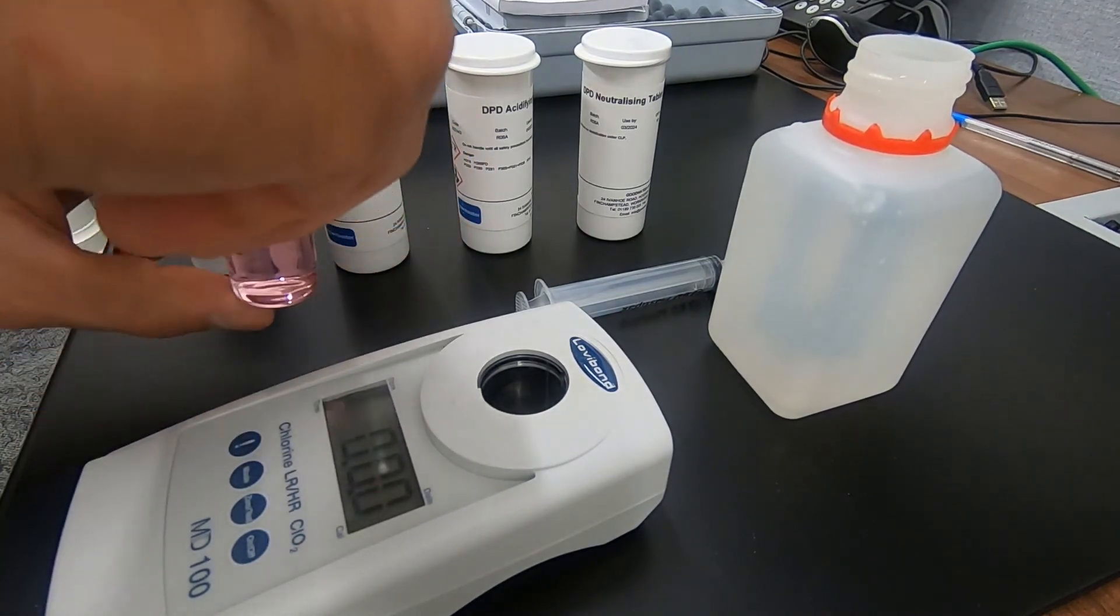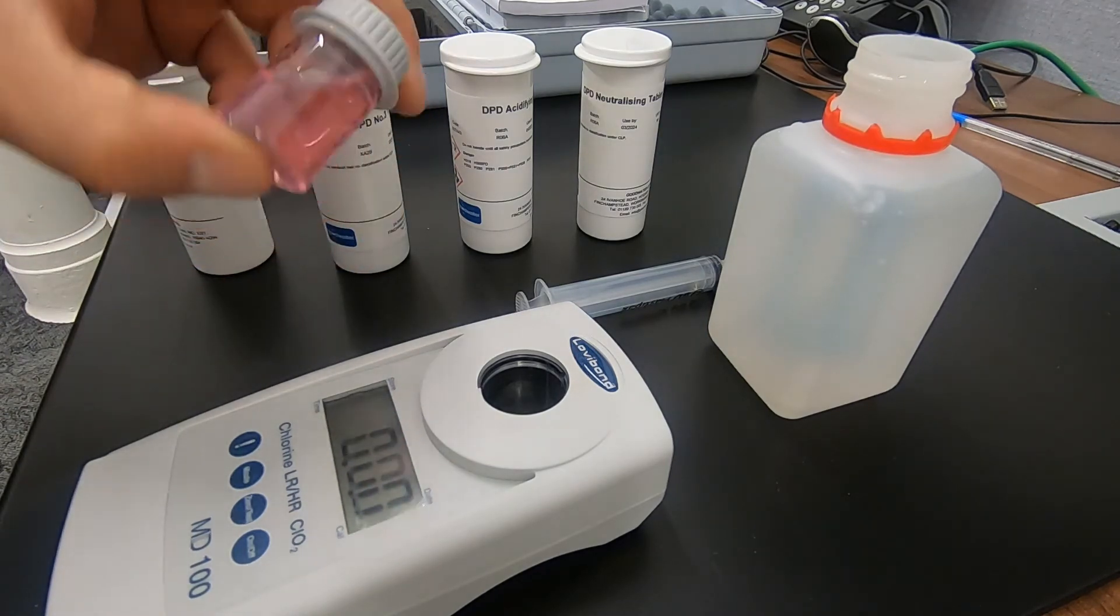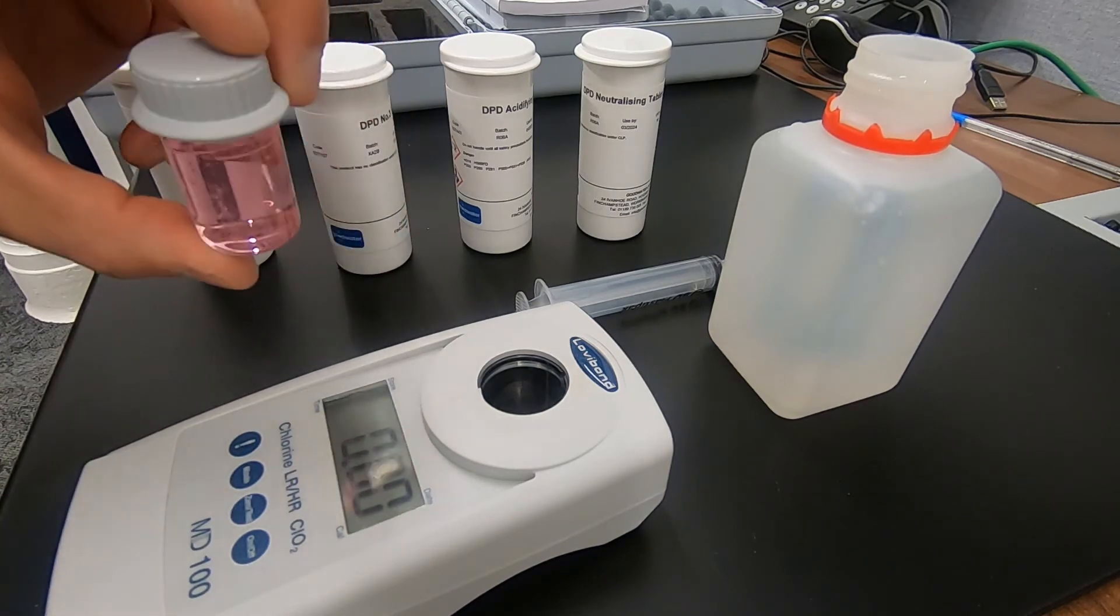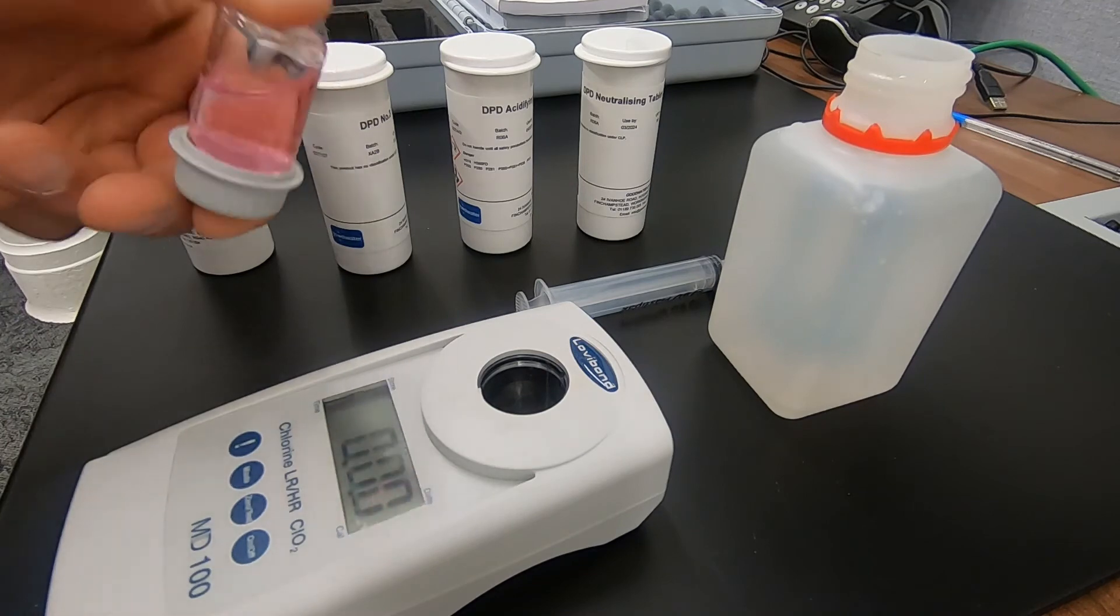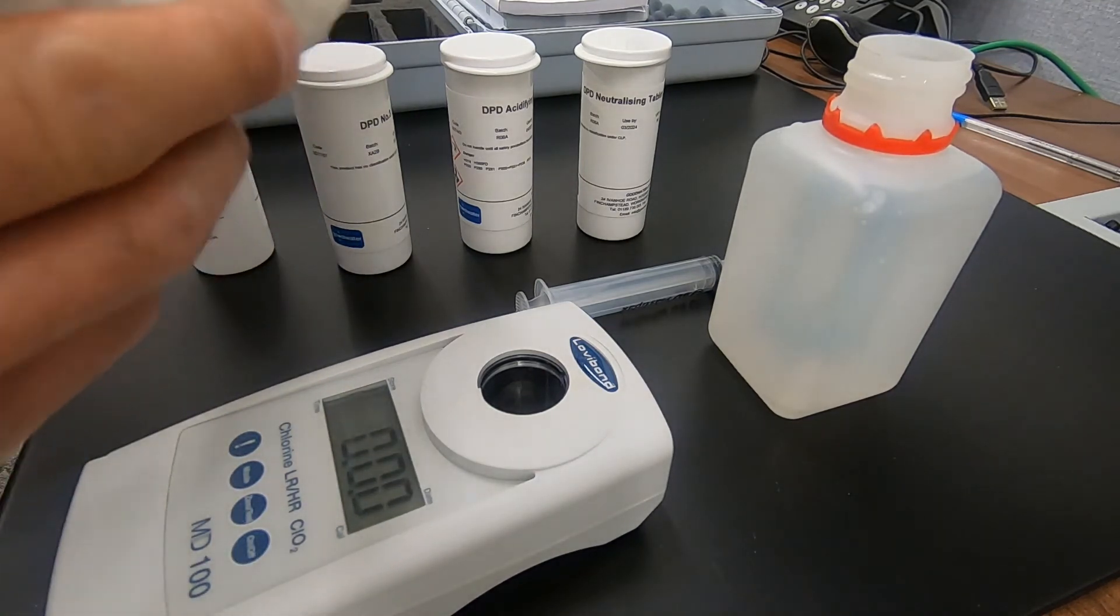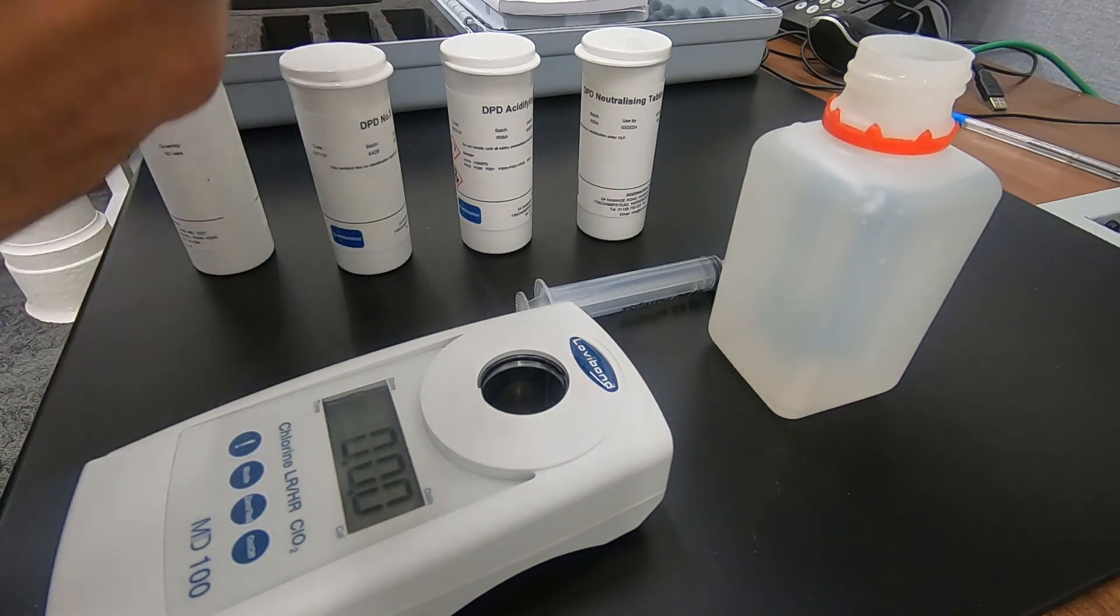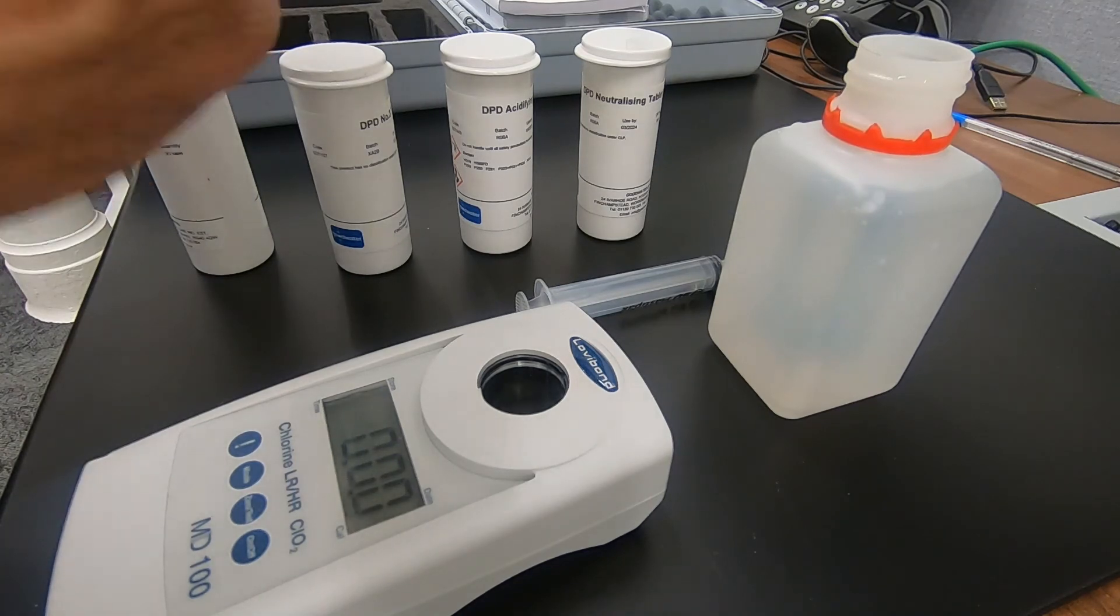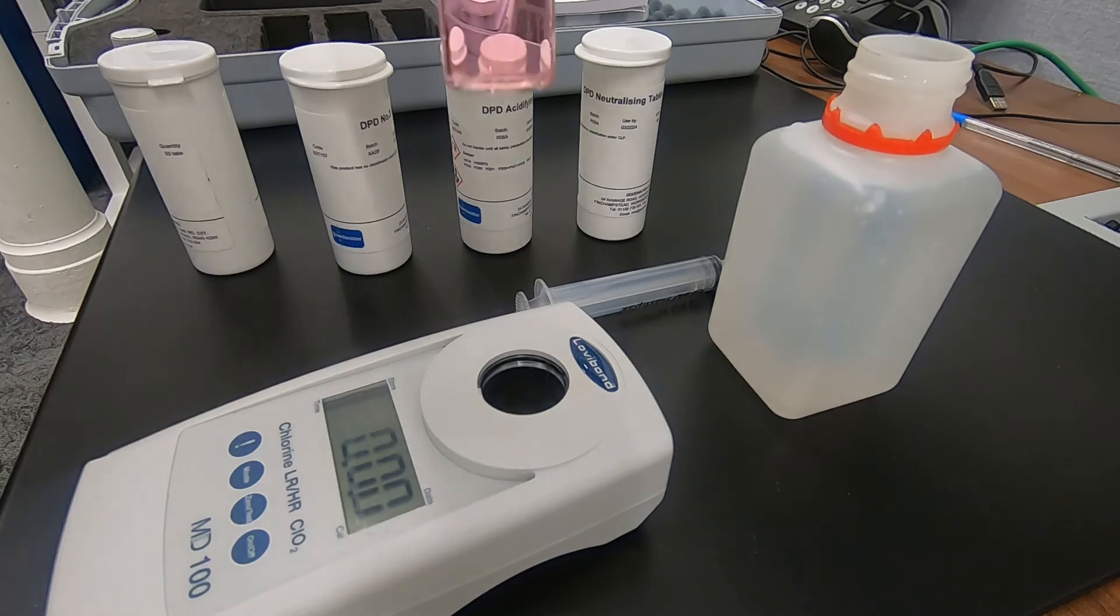So we can cap that, invert that again five or ten times. We get our soft cloth or paper towel. Wipe the outside to make sure there's no water residue and fingerprints, ensuring not to touch that vial again.